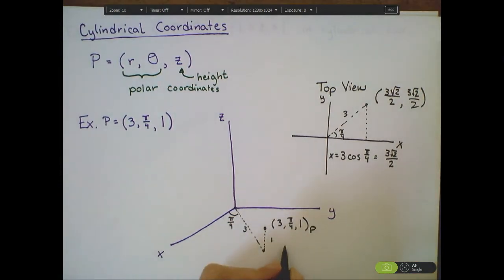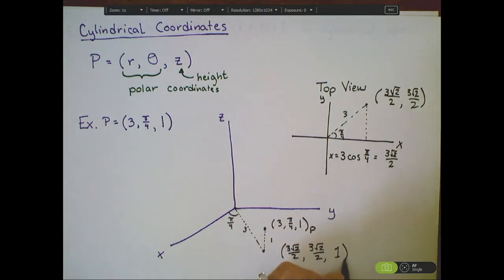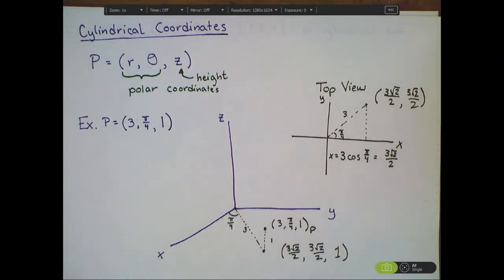And then the z-coordinate would just be 1. So this is in polar coordinates. And in rectangular coordinates, I would get 3 times the square root of 2 over 2, 3 times the square root of 2 over 2, and then a z-value of 1, using triangle geometry.